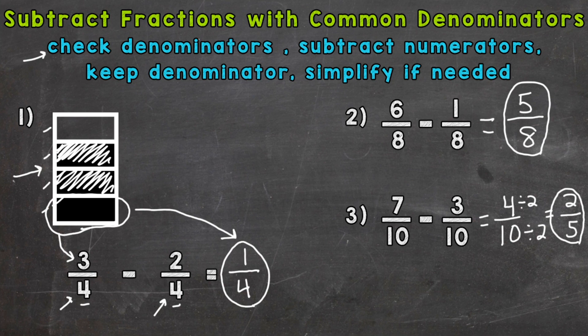We did not change the value of our answer four tenths. It's still equivalent. Two fifths is equivalent to four tenths. We just simplified and broke that fraction down. Again, if you need help with that simplifying process, I dropped that link down in the description.